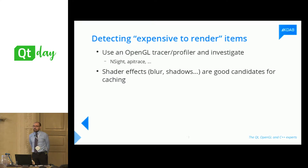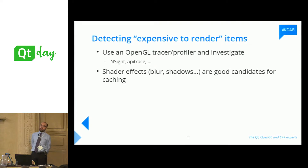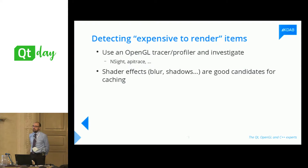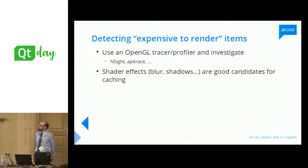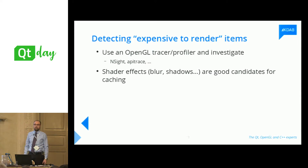How do I detect if I have elements that are expensive to render? The best way is to run your application inside an OpenGL tracer, get a log, and understand how many draw calls you're making. I typically use NSight for NVIDIA and API Trace, which is cross-platform. Inside those logs, you'll see that drawing one element requires dozens of draw calls. For instance, a blur effect does several draws of the same element at different resolutions in order to achieve the blur.